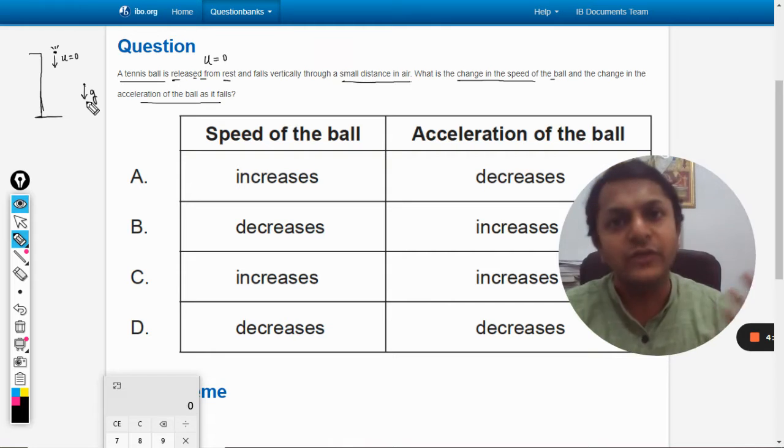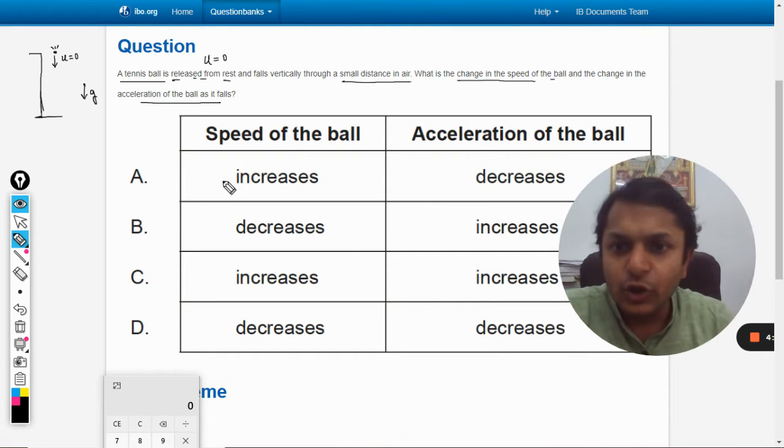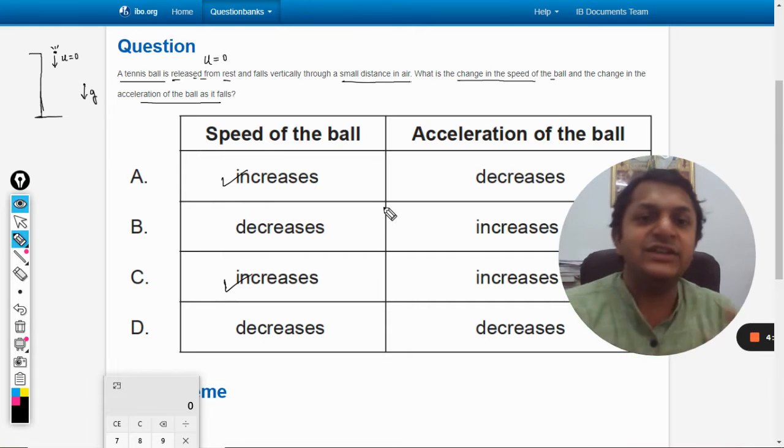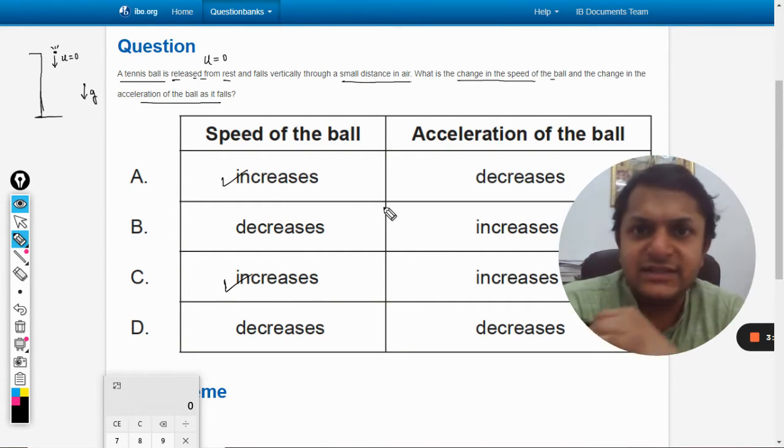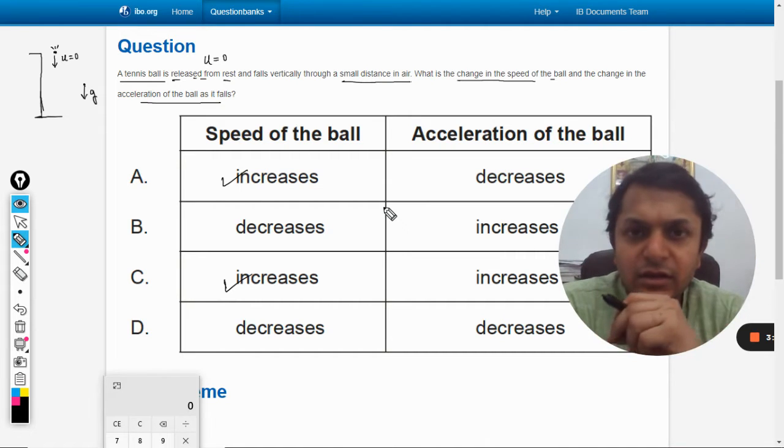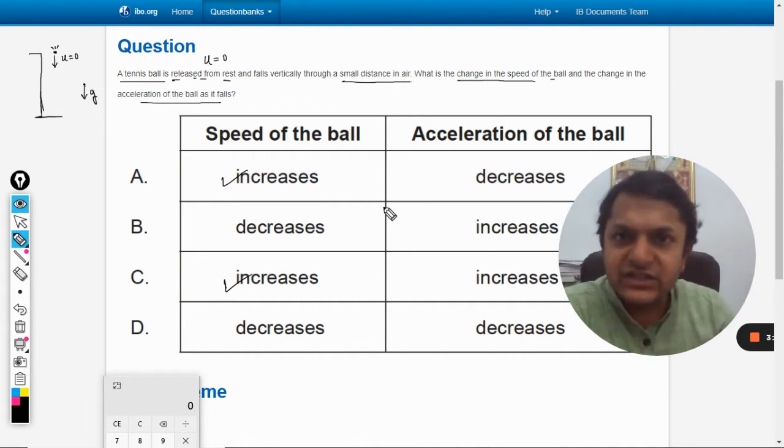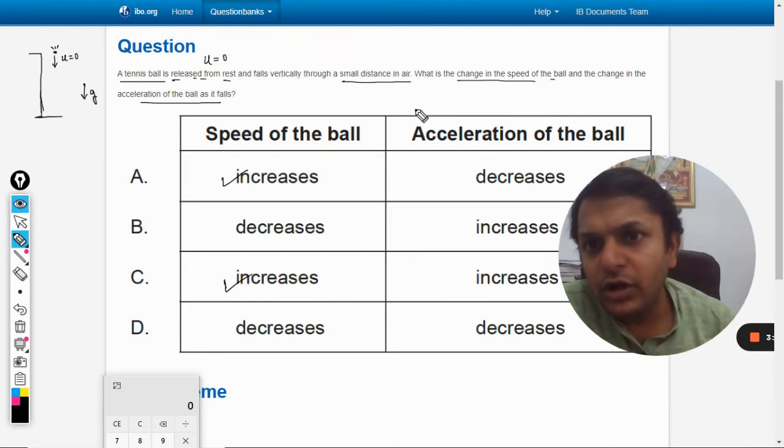So it will increase. Now about the acceleration of the ball, if the resistance by the air or the air drag or the viscous force is neglected, the ball will be acted upon by the acceleration due to gravity which is constant.